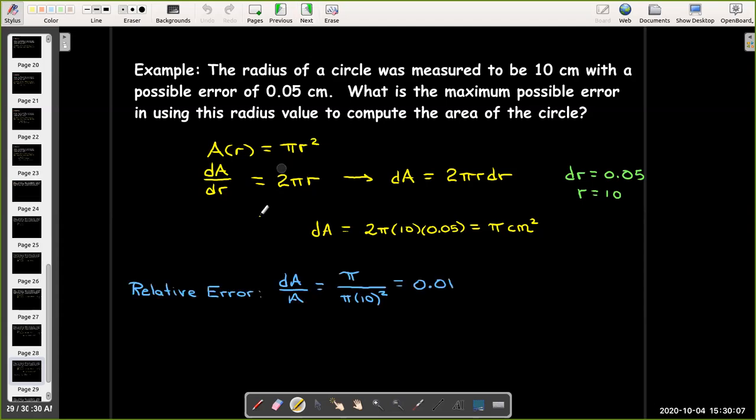So, it's interesting that if I look at the relative error, so in other words, the maximum possible error in A divided by the calculated value of A, I get 1/100th.